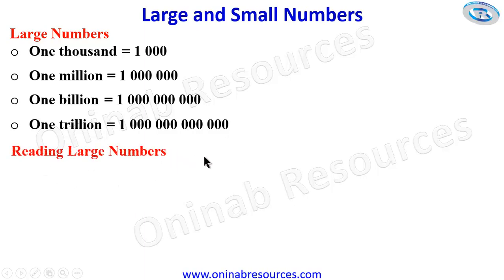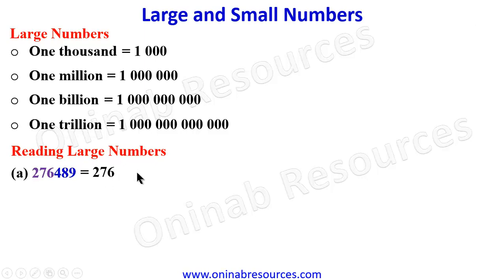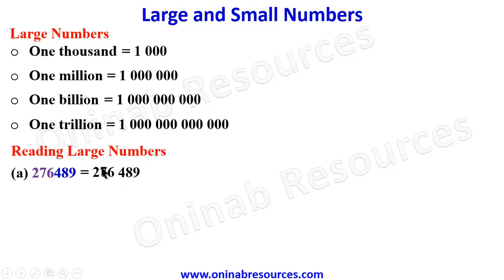Now we look at reading large numbers. We have a number with six digits here. It is advisable to group the numbers in threes. So we group: one, two, three — group — one, two, three — group. We then rewrite and separate them, so we have two hundred and seventy-six, space, four hundred and eighty-nine.